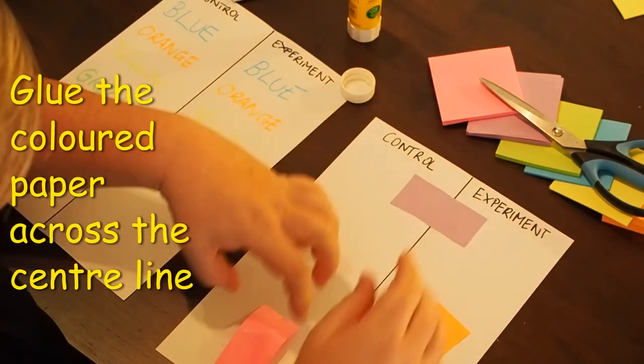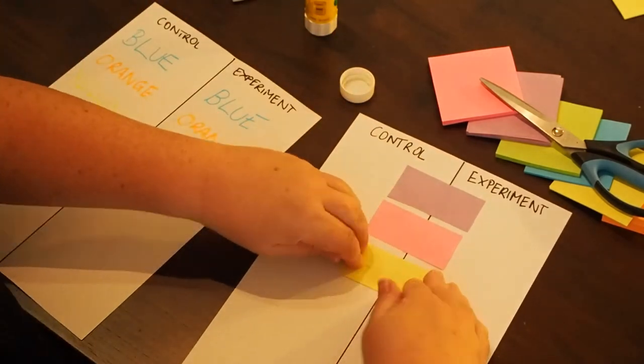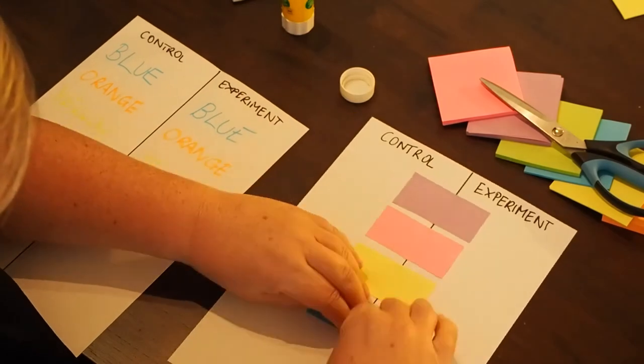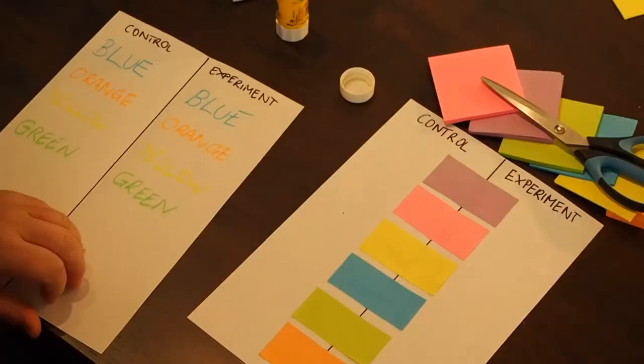If you choose to use colored paper or post-it notes, glue the pieces across the line you've drawn in the center of the page. Try and have the same amount of paper on each side of the line. Again, don't rush it. It's important they're all well stuck.